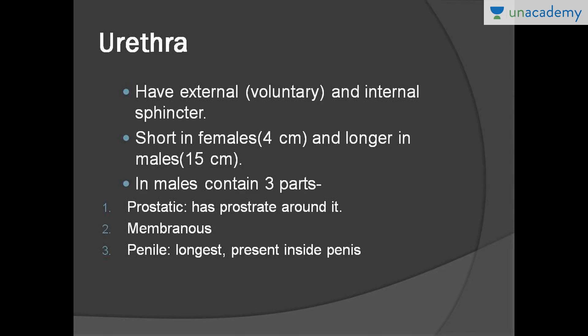Finally, the urethra has the external urethral meatus at its end. It is shorter in females (4 cm) and longer in males (15 cm). It has a voluntary external sphincter and a non-voluntary internal sphincter formed by the urinary bladder. In males, it contains three parts — PMP: prostatic, membranous, and penile. The penile part is the longest and is present inside the penis, with the prostate gland surrounding the prostatic part.